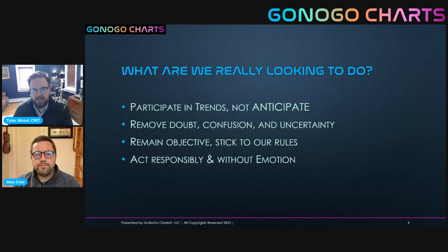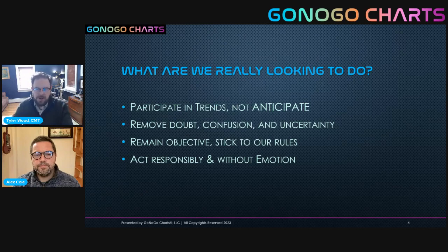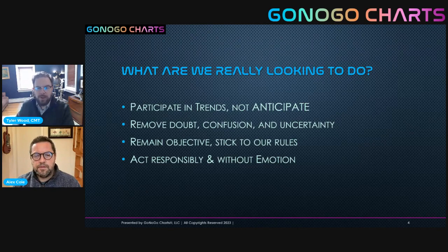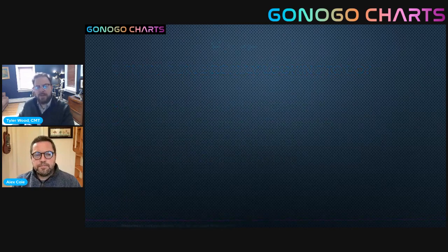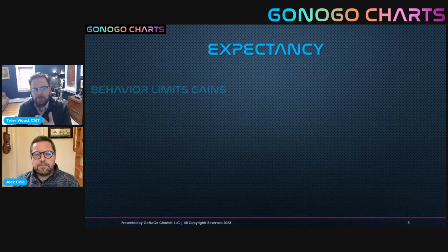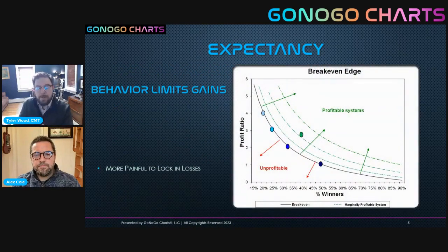We know most human beings come up with their opinion on a situation and then enter the world looking for evidence that supports what they already believe. That's called confirmation bias. So to help illustrate this point, we're going to get a little more mathematical around the expectancy formula.